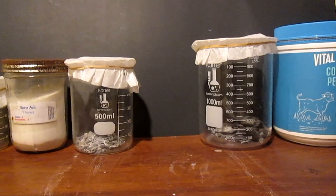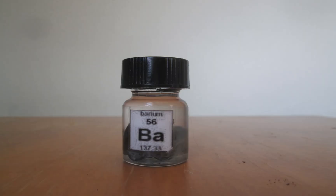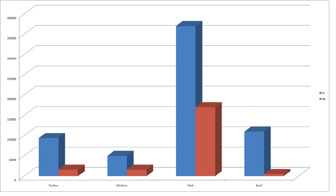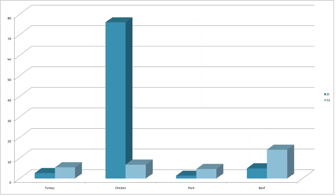Now to wrap it up, let's compare the concentration of a few metals in different animals. At the exception of bone ash, every single one of them concentrates strontium better than barium in their bones, with the highest concentration found in pork and the lowest in chicken. But chicken also concentrates zirconium far better than any others.